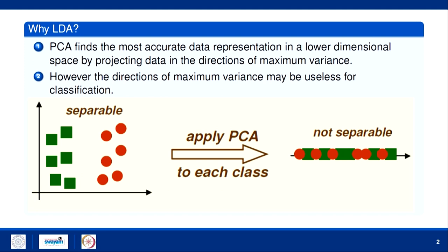My data is linearly separable in 2D — I can use a linear classifier there. But coming to lower dimensional space, the data is no more linearly separable. So I want to go to lower dimensional space, but it should preserve the property of linear classification. If the data is linearly separable in the higher dimensional space, after projecting to lower dimensional space it should still be linearly separable. How do we find such a line so that linear separability is preserved?